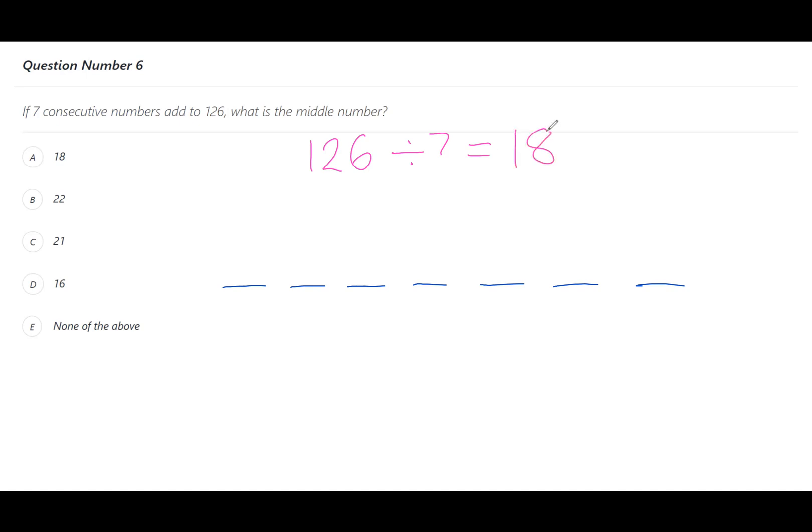That will always form the middle number of your sequence. So 18 is the middle number, which means your sequence of consecutive numbers, meaning numbers next to each other, would be 15 through to 21.